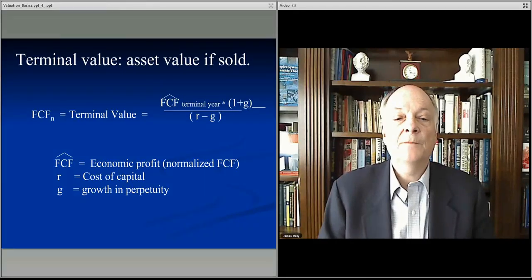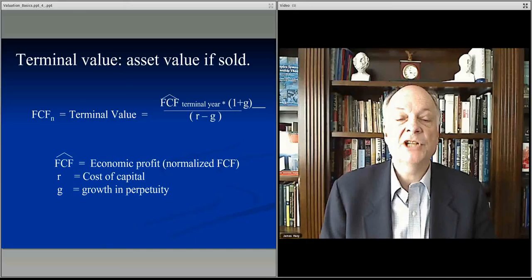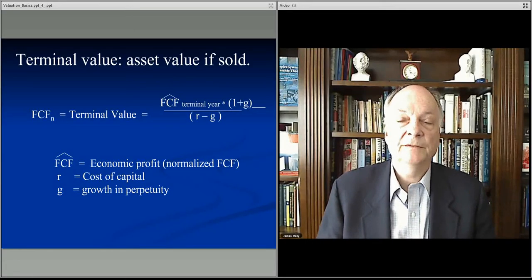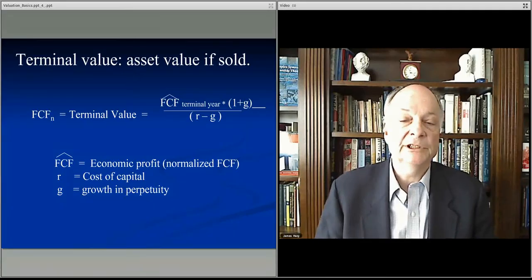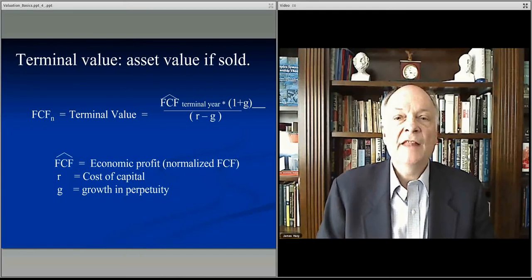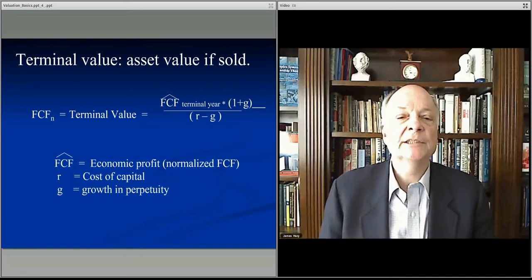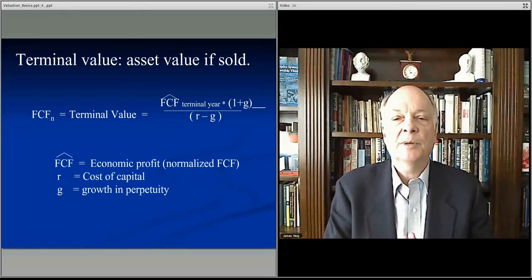So you take your free cash flow, multiply it times 1 plus G. That gives you your Nth year, your fifth year, your N plus 1 year, or your 4 plus 1 year, which is your N year. That would continue to grow ongoing into perpetuity.